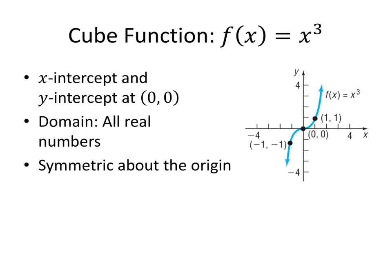Next up, we've got the cube function, f of x equals x cubed. The graph sort of looks like a twisted parabola — the right-hand side still has that parabola-type shape, but the left-hand side looks like it's been twisted and flipped upside down. The x-intercept and the y-intercept are both at the origin. The domain is all real numbers; we can plug whatever number we want into x cubed. This graph has rotational symmetry about the origin — if we rotate it 180 degrees around the origin, the picture wouldn't change.